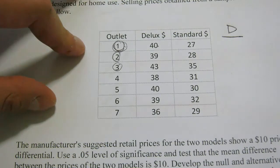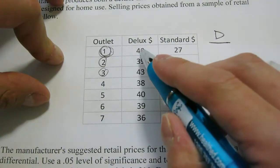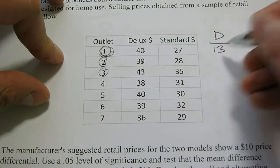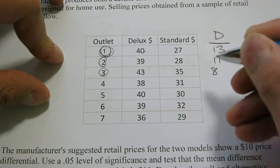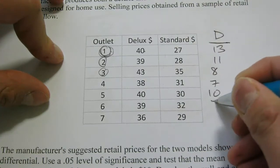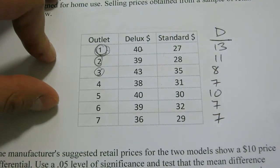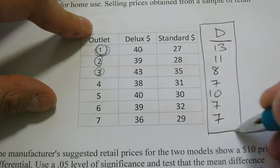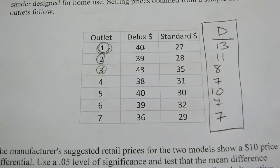For a paired sample, once you have the raw data, you calculate the difference for each pair — deluxe minus standard. So: 40 minus 27 equals 13; 39 minus 28 equals 11; then we have 8, 7, 10, 7, and 7. From now on, all we're going to deal with is these differences. You can ignore the original data. This is now like a t-test for a sample mean or a population mean.